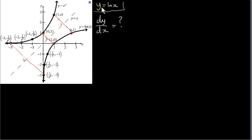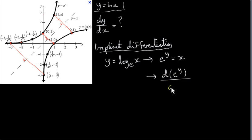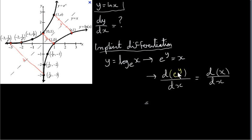Now let's look at the derivative dy/dx of the function y equals ln of x. I will use implicit differentiation. I take y equals ln of x, or log to the base e of x, and rewrite it as e to the power of y equals x. Now to get dy/dx, I differentiate both sides of this with respect to x. Differentiating e to the power of y with respect to x — since y is given implicitly as a function of x — we must use the chain rule.